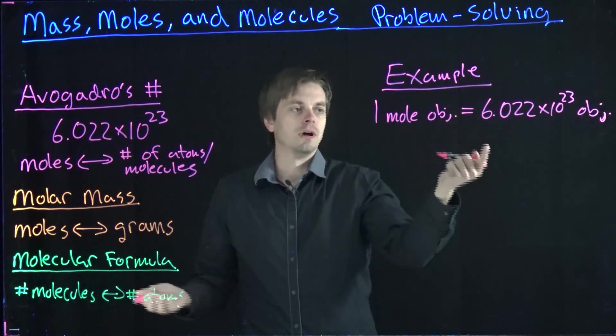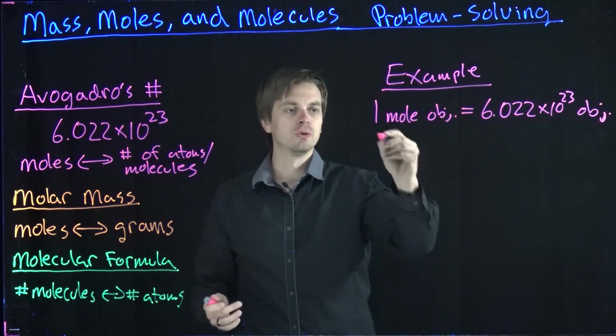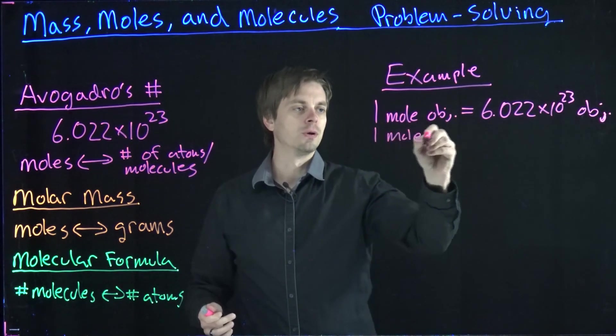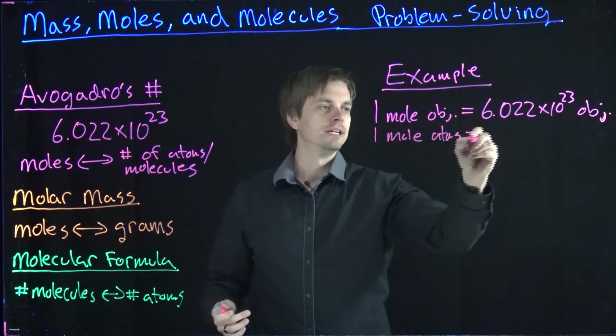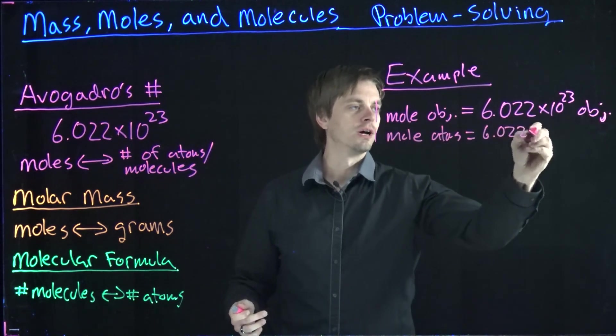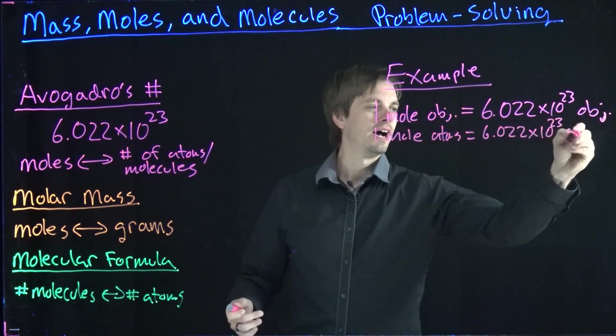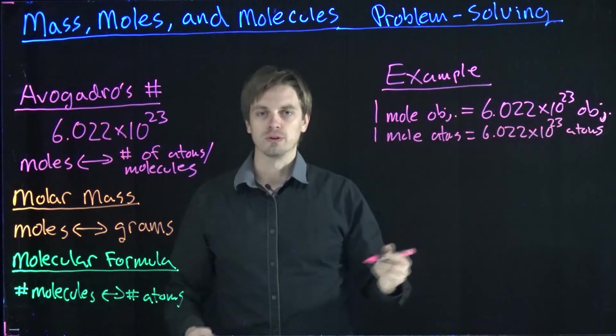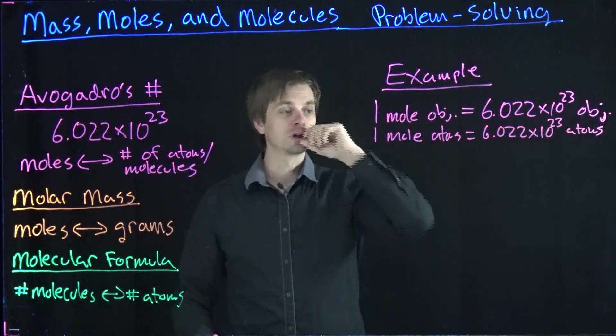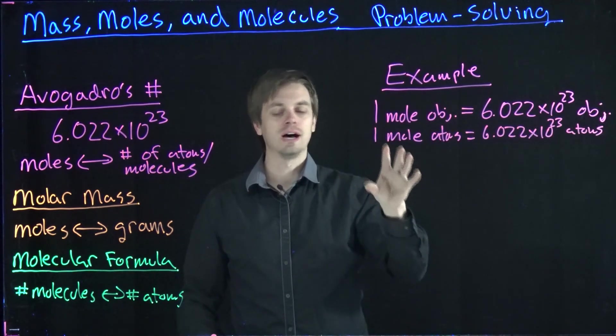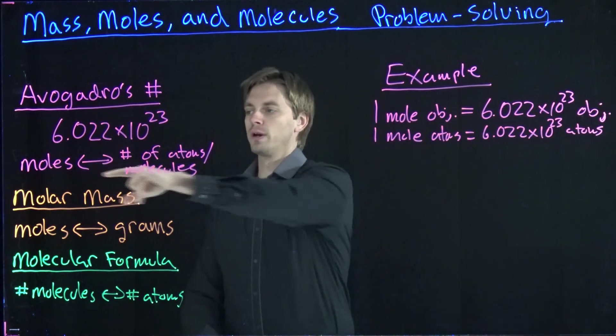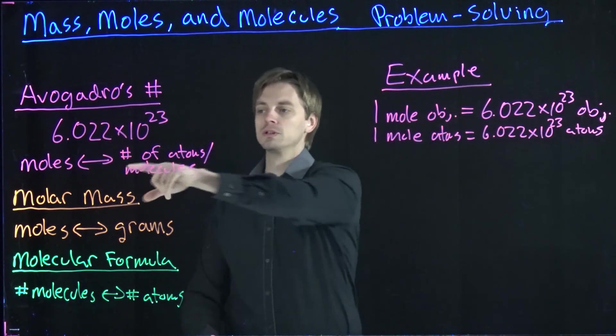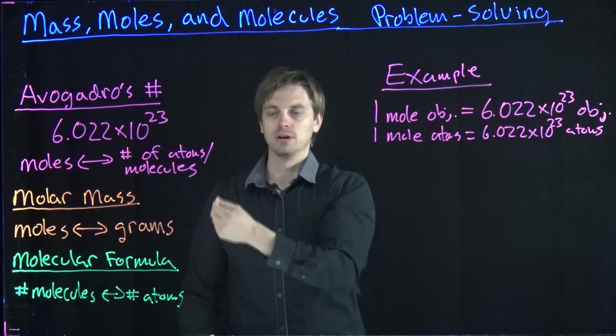One mole of objects—we can replace objects with atoms, molecules, whatever you might want. So we can say one mole of atoms equals 6.022 times 10 to the 23rd atoms, and so on. This conversion factor is going to be coming up a lot anytime we're wanting to convert between moles and number of objects, whether it's atoms or molecules.